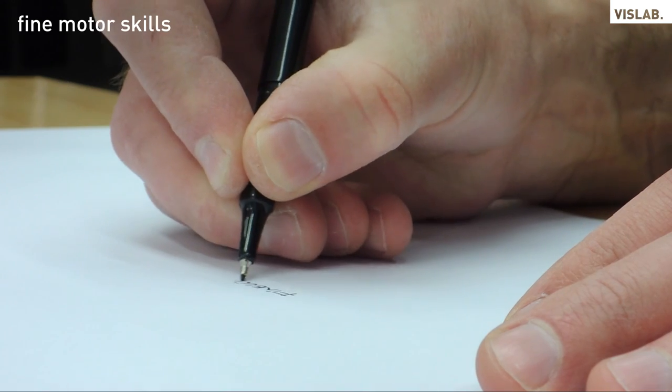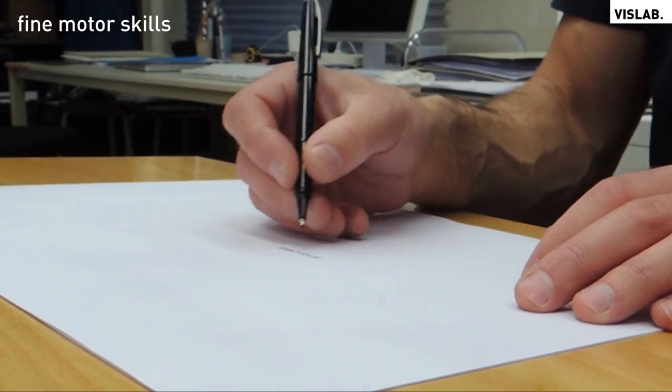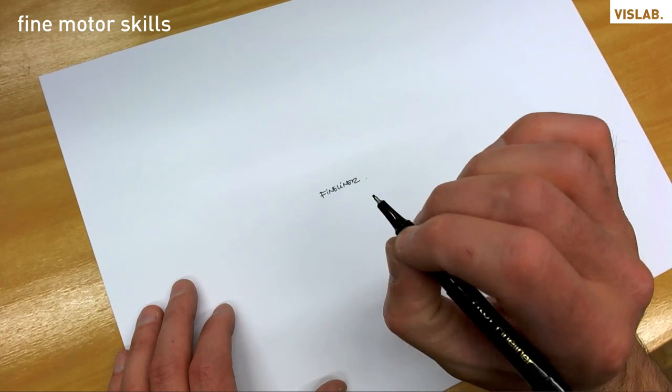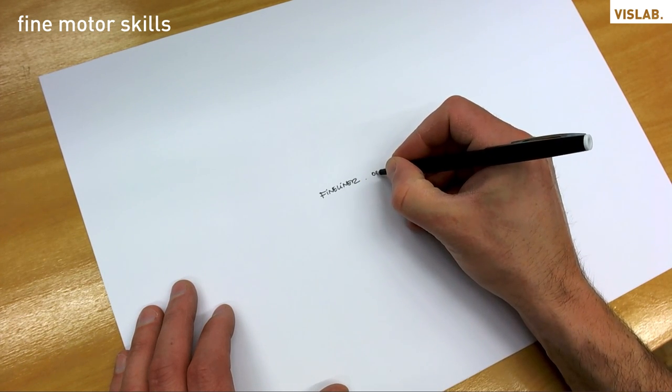When I write, I hold my pen pretty close to the tip to make very precise movements with my fingertips. These so-called fine motor skills are great for adding details at the final stages of your sketch, but are pretty useless for setting up the bigger picture.